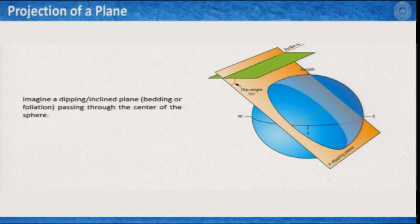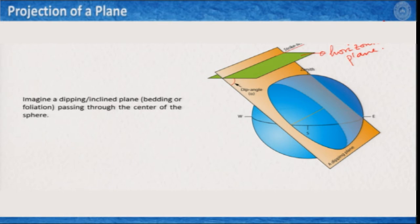Let us have a look at how to project a plane on the stereonet. It is very similar to the way we projected the line, but because it is a plane, it involves a little more complexity. We have a blue sphere with a zenith, an equatorial plane, and an orange inclined plane, plus a green horizontal plane. The green horizontal plane and the orange sloping plane would intersect along a line — this line is the strike line, and its orientation with respect to magnetic north is the strike of this sloping plane.